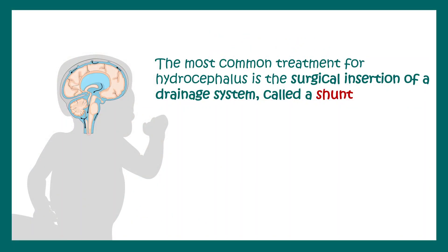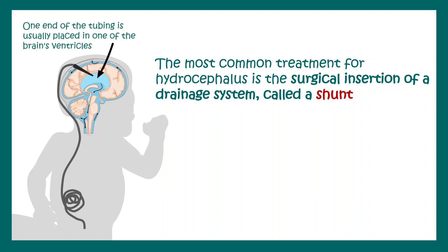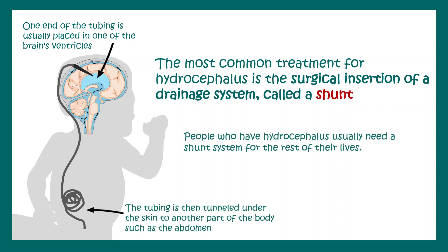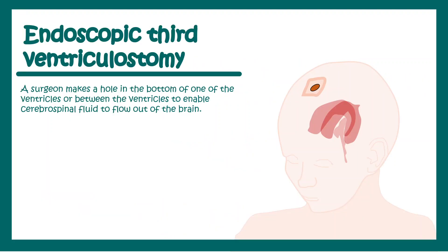The most common treatment for hydrocephalus is surgical insertion of a drainage system called a shunt. A tube is inserted into the ventricle and drains into the abdominal cavity where the fluid can be reabsorbed. People with hydrocephalus usually need a shunt system for the rest of their lives, monitored periodically. Another option is endoscopic third ventriculostomy, where surgeons pass an endoscope through the skull into the ventricle to create a passage for the drainage system.